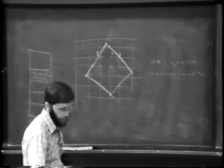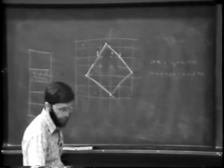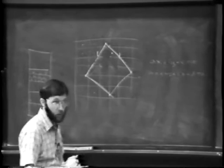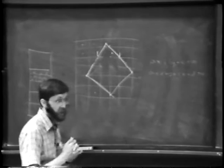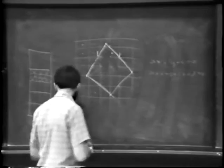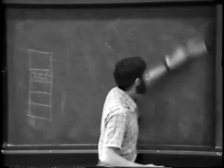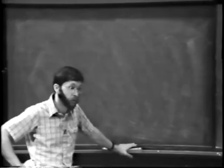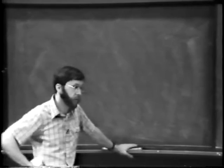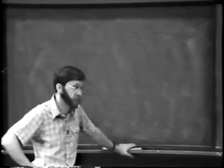One other item before we jump into the hidden surface algorithm: the notion of polygon clipping. It's a very important notion in hidden surface algorithms. Polygon clipping was probably presented for the purpose of clipping against the edge of the screen or the edge of the image space. In fact, there are additional uses beyond that in conjunction with hidden surface algorithms that make it worth going over again.